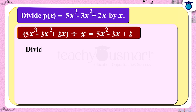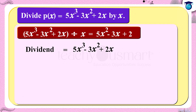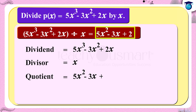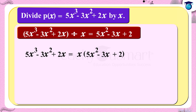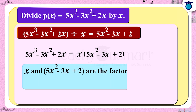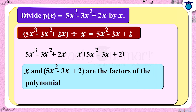Here the dividend is 5x³ - 3x² + 2x, the divisor is x, the quotient is 5x² - 3x + 2, and the remainder is 0. Since the remainder is 0, we can write 5x³ - 3x² + 2x as the product of x and (5x² - 3x + 2). So x and (5x² - 3x + 2) are the factors of the polynomial 5x³ - 3x² + 2x.